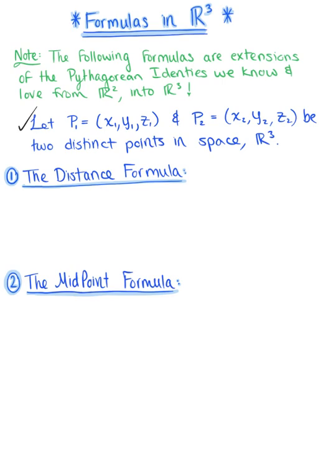To begin, let P₁ be the ordered triplet (x₁, y₁, z₁), and let P₂ be the ordered triplet (x₂, y₂, z₂). These are two distinct points in space.